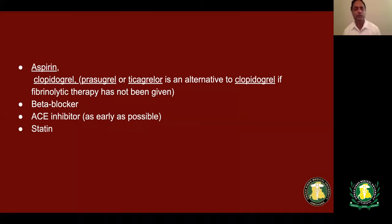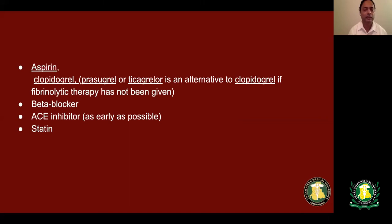Medications for acute coronary syndrome include aspirin, clopidogrel, prasugrel, and ticagrelor as newer alternatives to clopidogrel — preferred in patients who did not receive thrombolytic therapy. Beta blockers should be given right away, 5 mg intravenously every 5 minutes times three, then transitioning to oral beta blockers. ACE inhibitors — in the past thought to be given only in anterior infarction with LV dysfunction — now every patient should receive ACE inhibitors unless there is a contraindication. Statins are given to reduce plaque burden and to smooth the rough edges of the plaque, decreasing the chances of future plaque rupture.